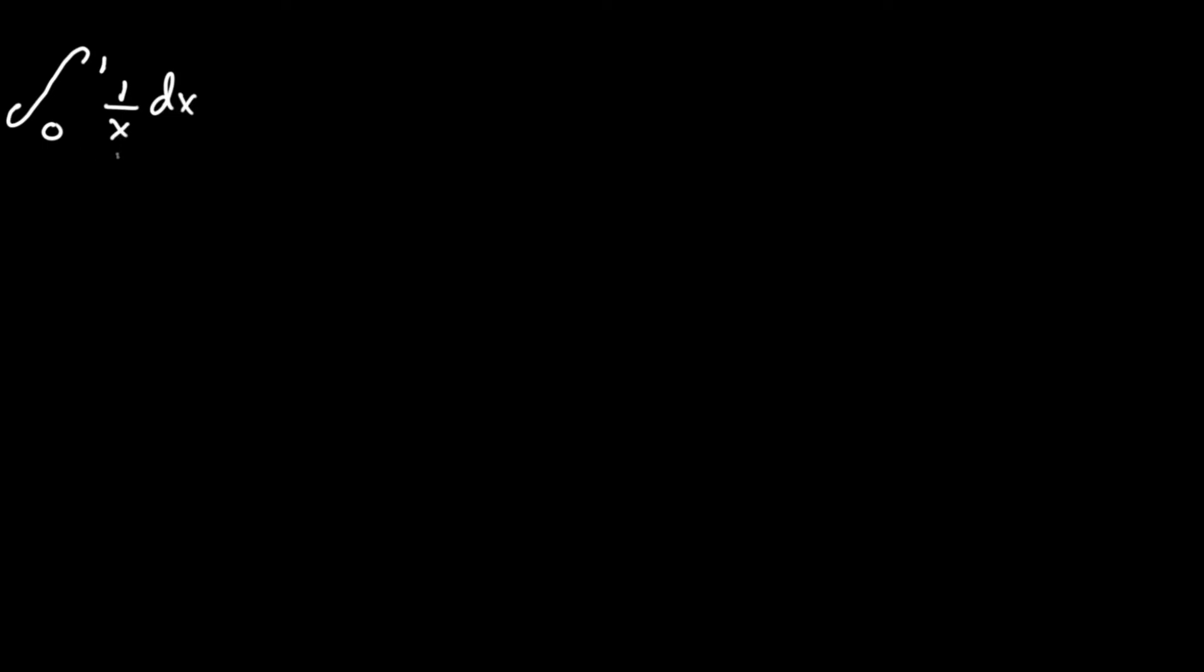So if you were to plug in 0, it would be no solution since it's 1 over 0. So we're going to have to apply a special property of improper integration in which we take the limit as n approaches 0 of the integral.